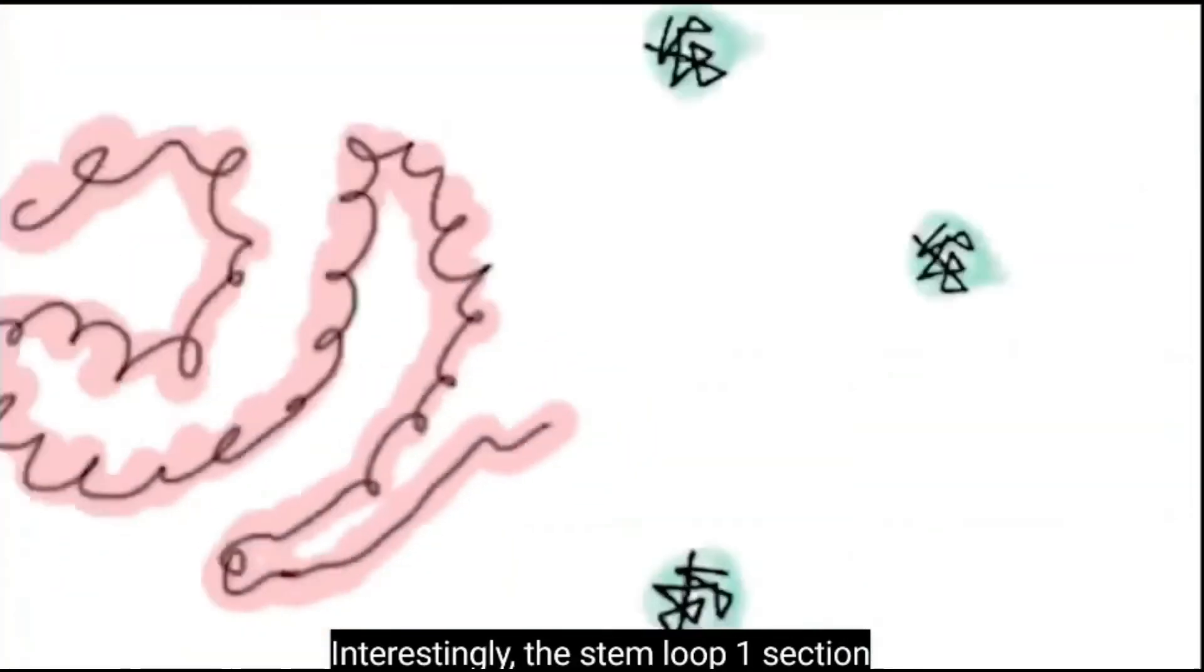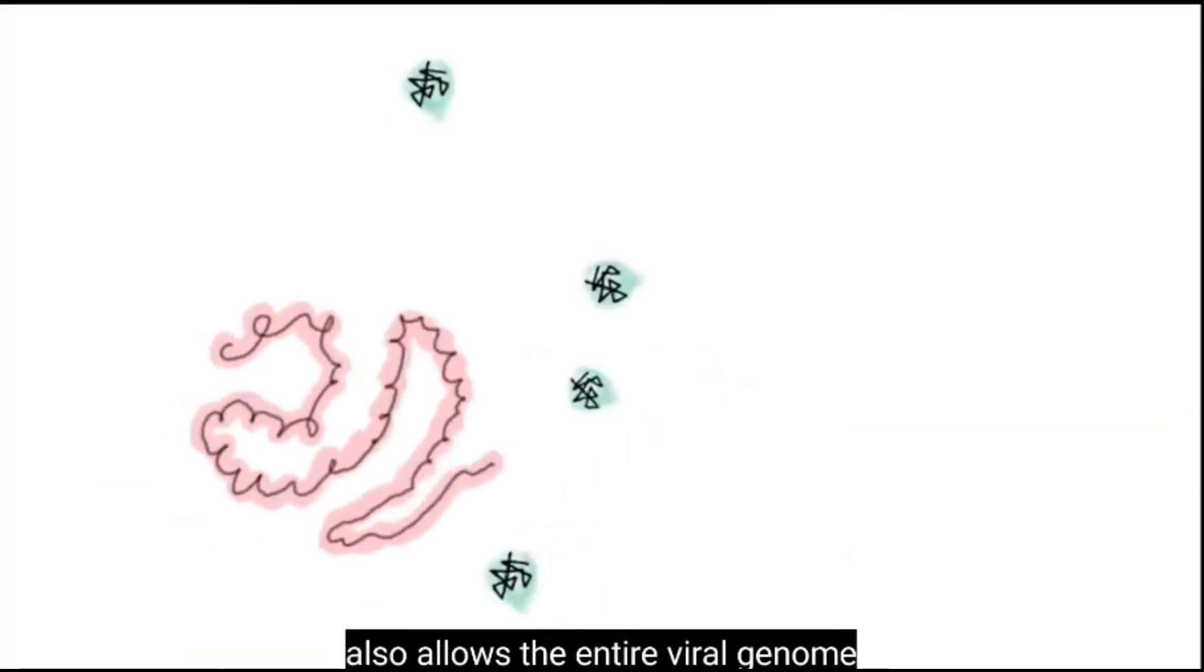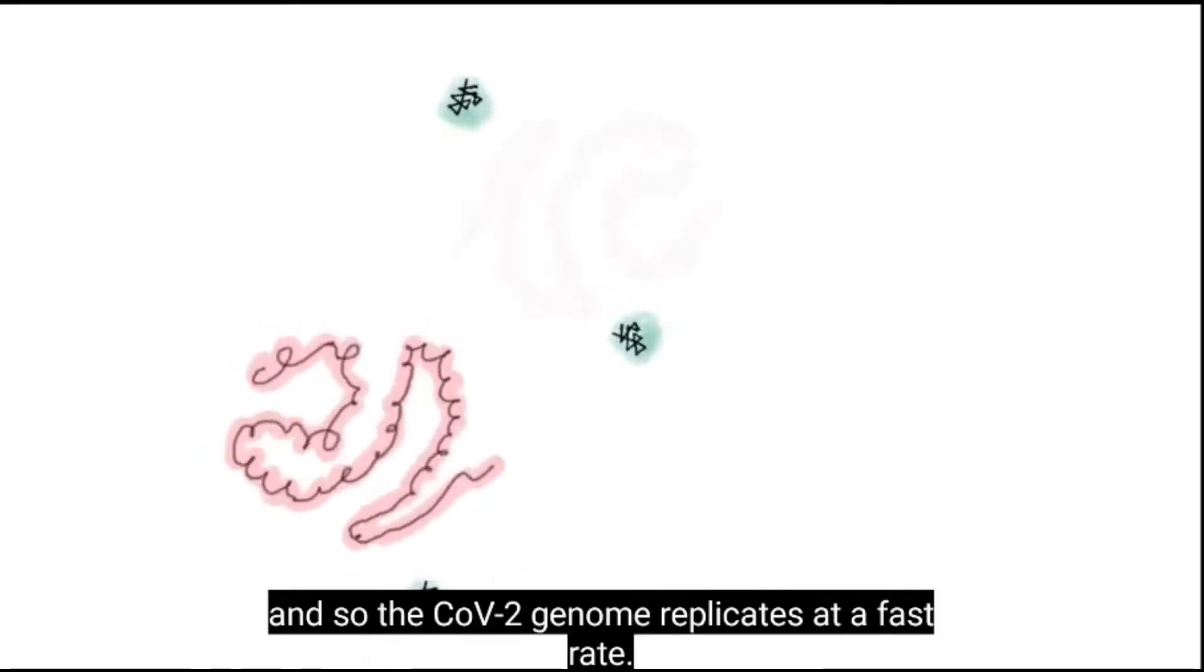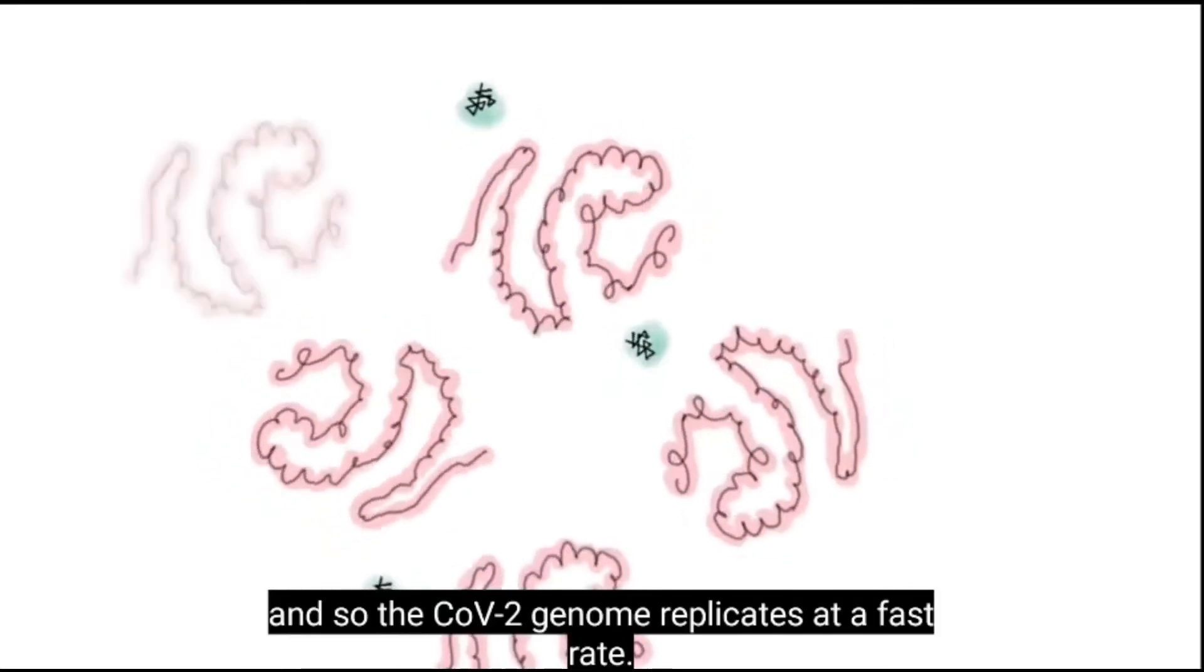Interestingly, the StemLuke1 section also allows the entire viral genome to evade NSP1 suppression, and so the CoV-2 genome replicates at a fast rate.